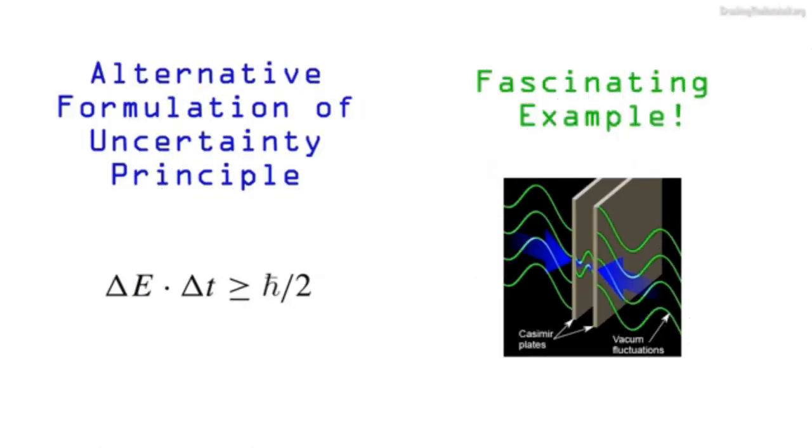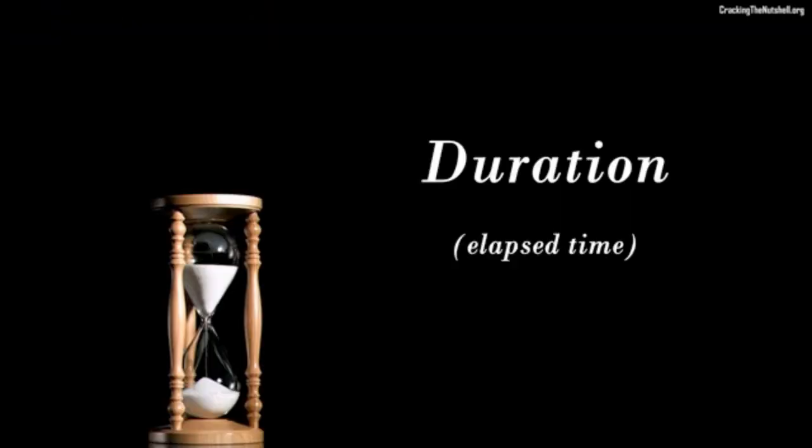The uncertainty principle is extended naturally to other pairs of variables. There is an equivalent principle for the pair energy-time, and other equivalent principles for other pairs of variables.